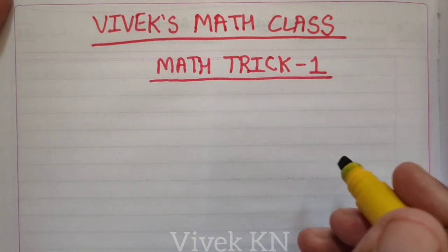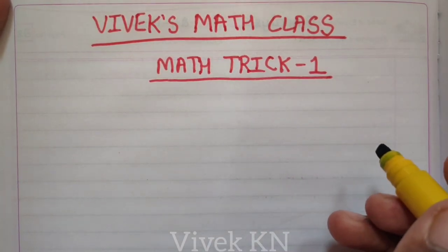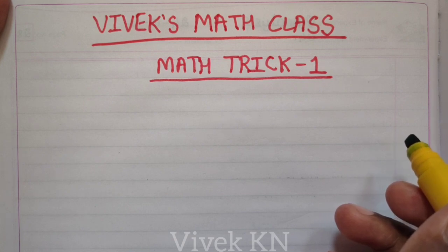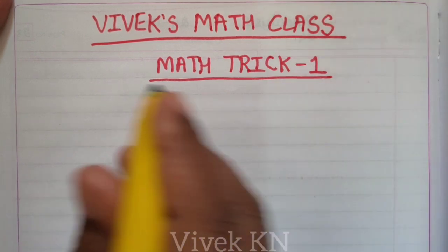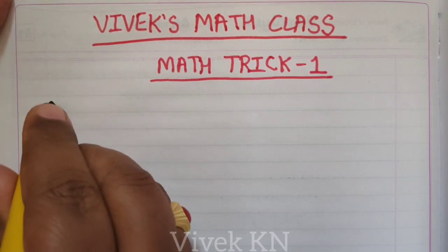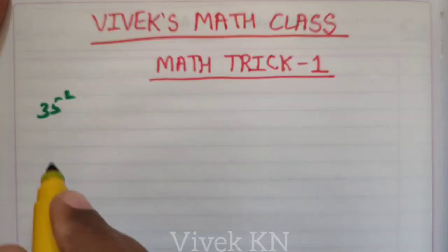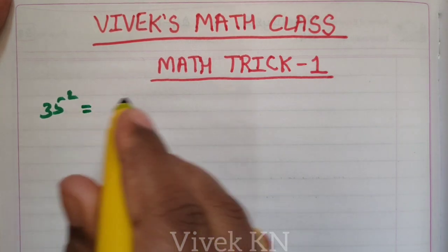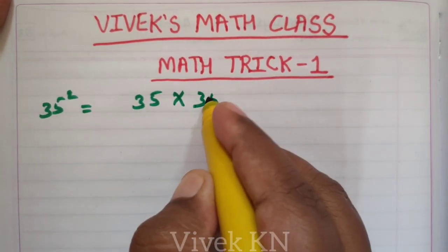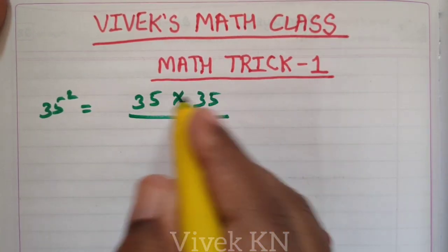First, let us use the normal multiplication method to square a number that ends with 5. For example, 35 square. 35 square can be written as 35 into 35. Let us multiply these two numbers.